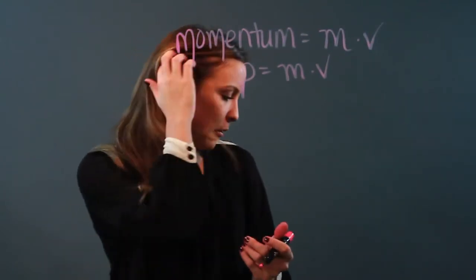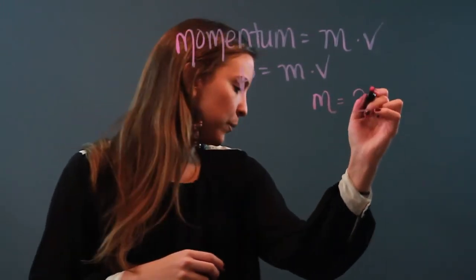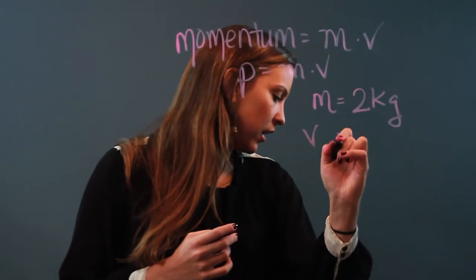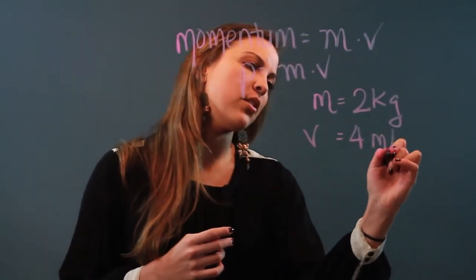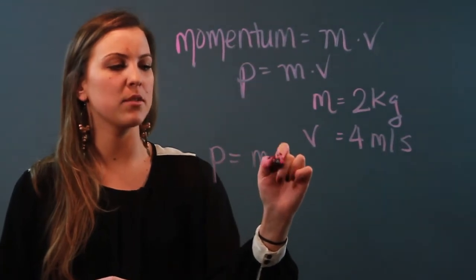As an example, let's say you are given a mass of two kilograms and you're given a velocity of four meters per second. Then you're just going to substitute, so your momentum is equal to your mass times your velocity.